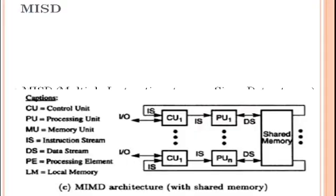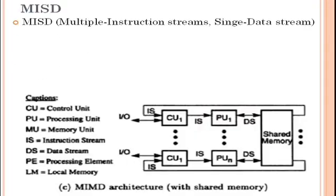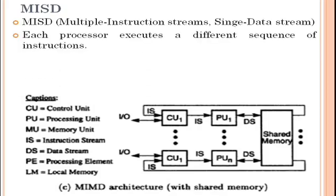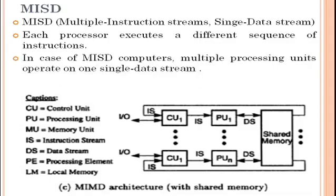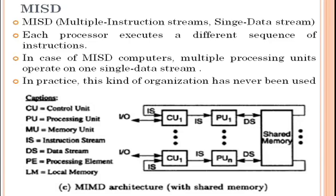MISD is Multiple Instruction Streams and Single Data Stream. Each processor executes a different sequence of instruction operations. In MISD computers, multiple processing units operate on a single data stream. In practice, this kind of organization has never been used.